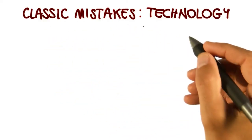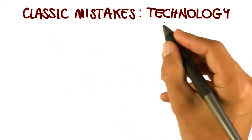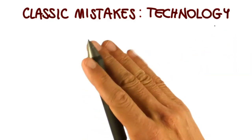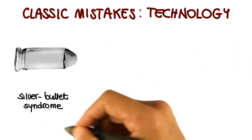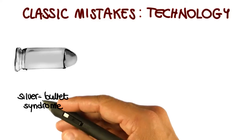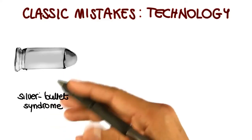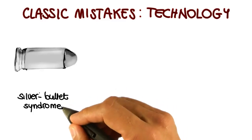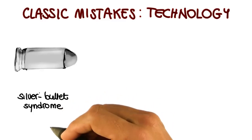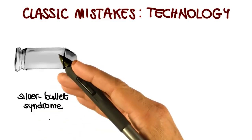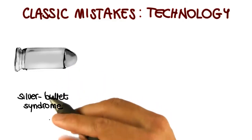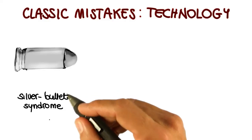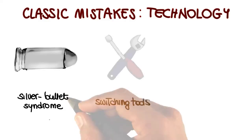The final type of classic mistakes I want to mention are technology-related mistakes. One typical mistake in this context is the silver bullet syndrome. The silver bullet syndrome refers to situations in which there is too much reliance on the advertised benefits of some previously unused technology — for example, a new technology. The problem here is that we cannot expect technology alone to solve our software development issues, so we should not rely too much on technology alone.